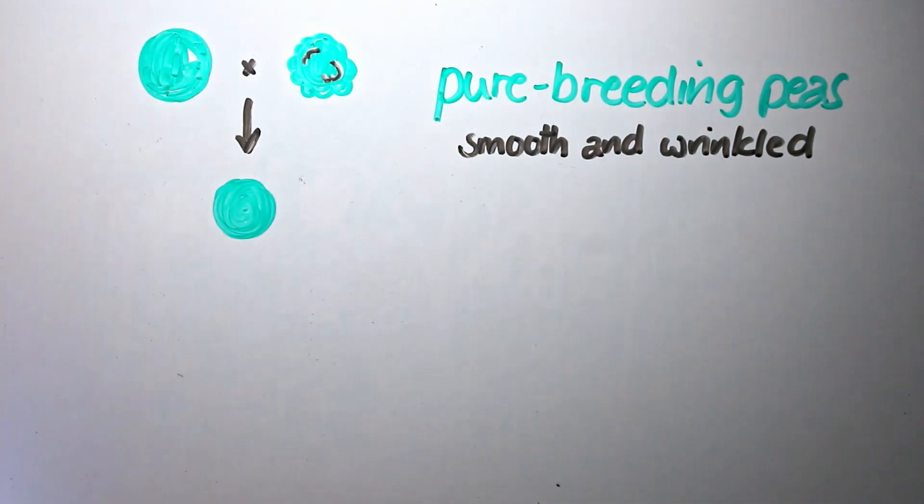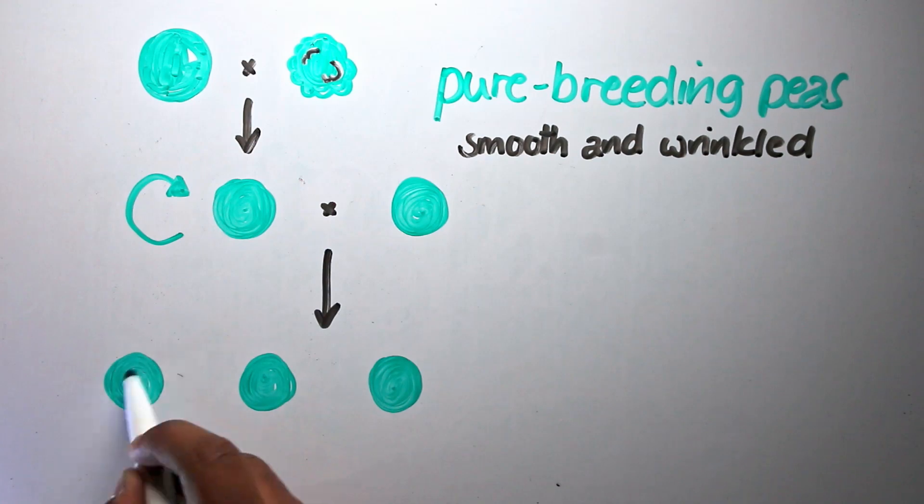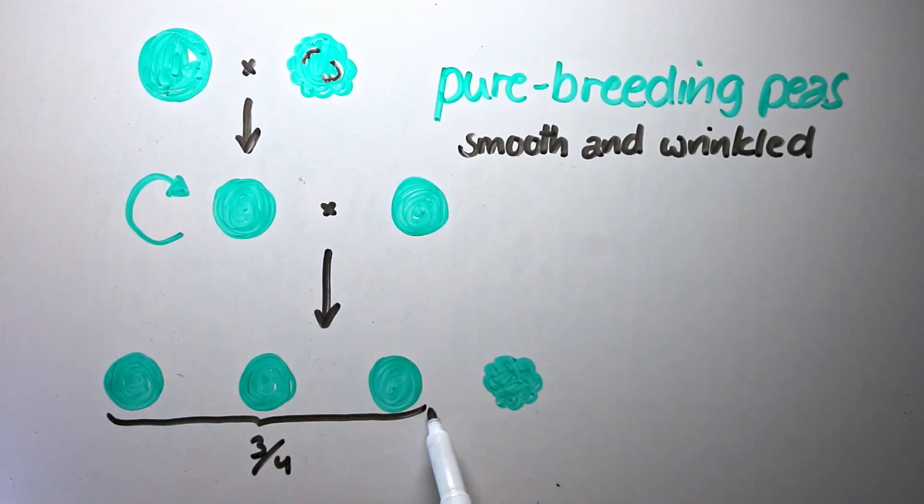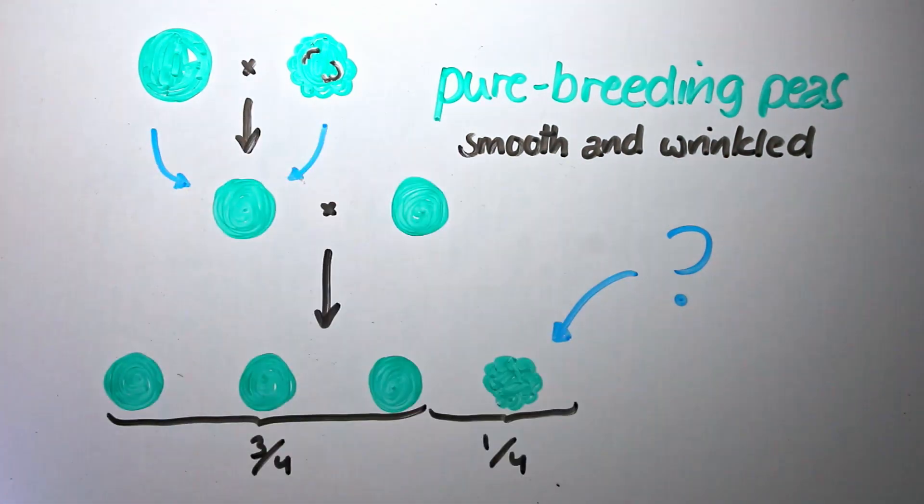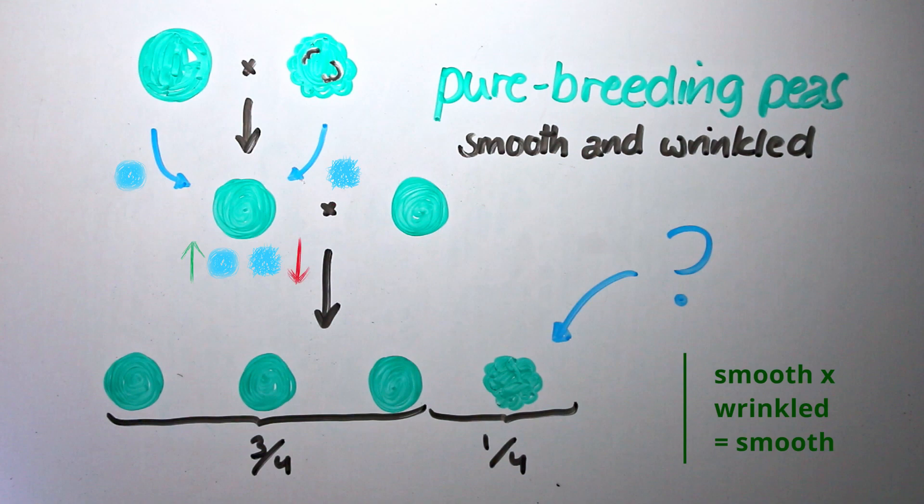He went one step further and bred it with itself, expecting all the offspring to be smooth. What he found was that three quarters of the offspring had smooth peas, but exactly one quarter had the wrinkled peas of its grandparents. Where did this wrinkledness come from? Mendel reckoned that the smooth offspring of the smooth and wrinkled peas inherited something from both the plants, but only the smoothness prevailed, as if smoothness was somehow dominant over wrinkledness.